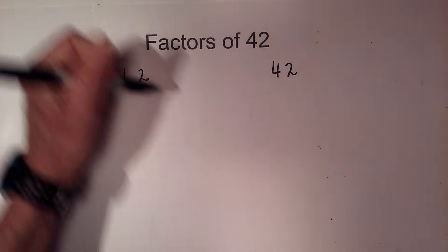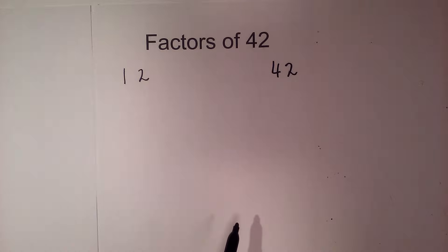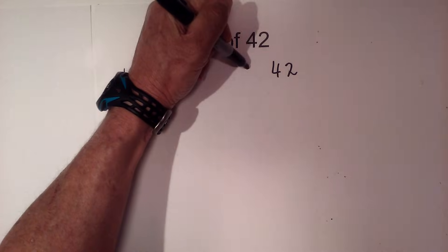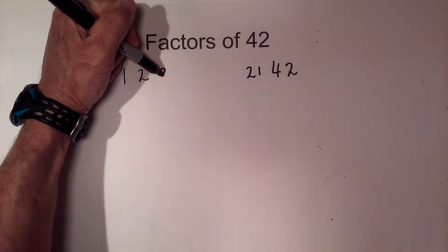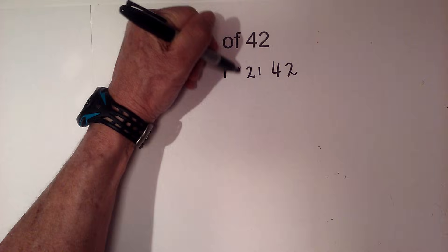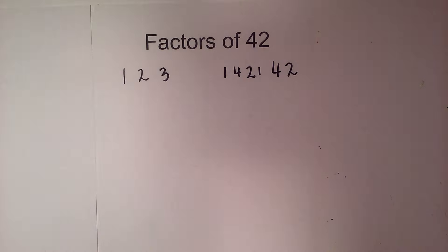2 will go into 42 because it ends in an even number. 2 times 21 is 42. 3 goes into 42 fourteen times.